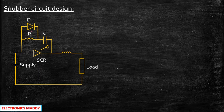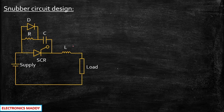For designing the snubber circuit parameters, we need to find the value of R, the value of C, and the value of L. We need to arrive at a common expression that can be applied for all the numericals we are going to solve. So first we will go with the derivation — I would suggest you make a note of this derivation in parallel as I'm doing it, and it will give you the easiest understanding of whatever is being done today.